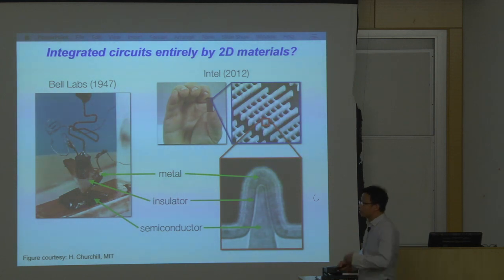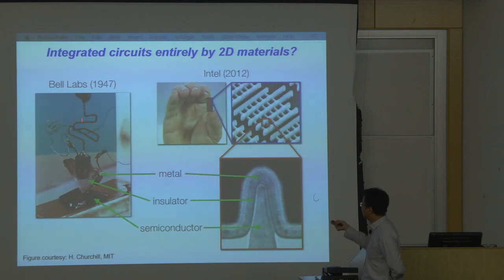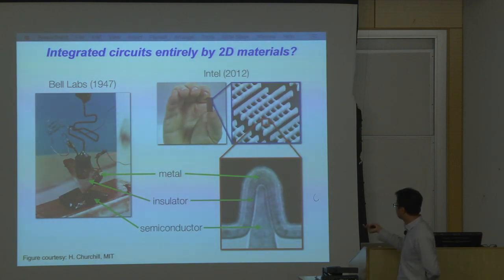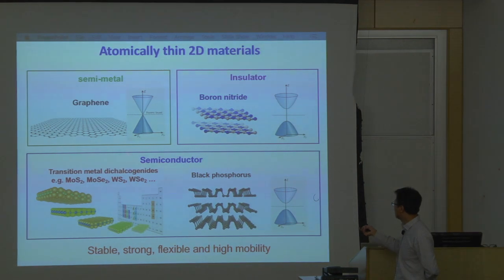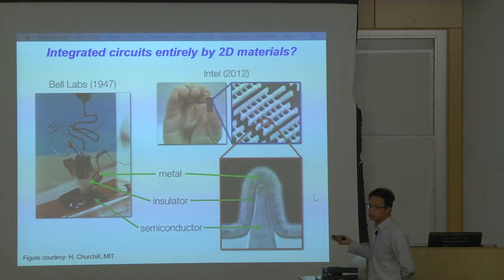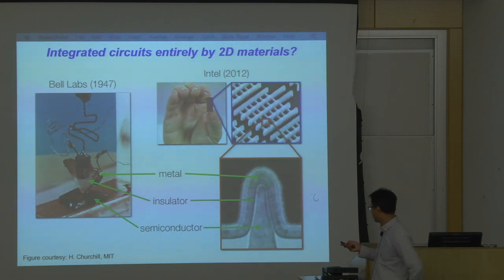This family of 2D materials has a lot of applications in electronics. For example, consider transistors: this is the first transistor made by Bell Lab about half a century ago, and this is the modern version made by Intel. Although very different in appearance and scale, both are made of metal, insulator, and semiconductor. For 2D materials, we have all of these combinations ready. In principle, we can build a whole circuit just from 2D materials. Nowadays, silicon technology is approaching a limit, and 2D materials open a new pathway to nanotechnology.